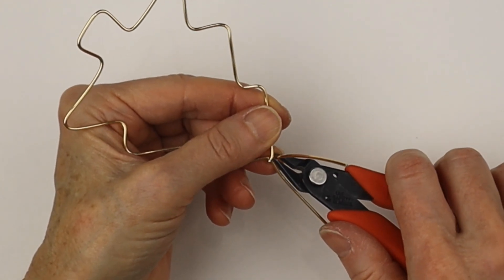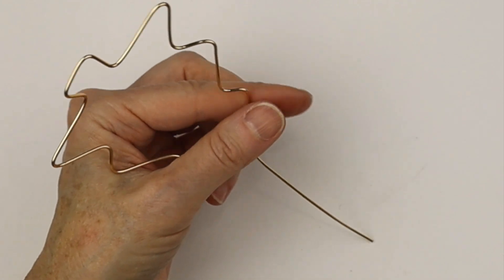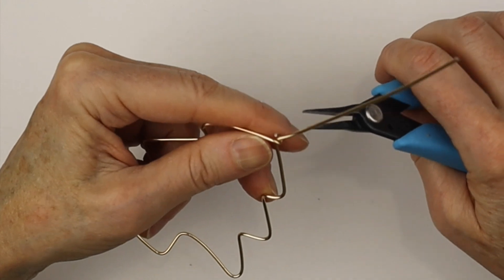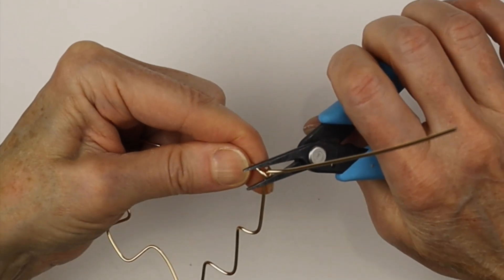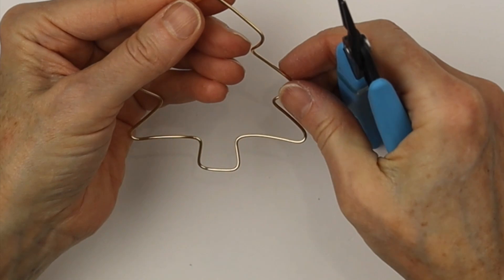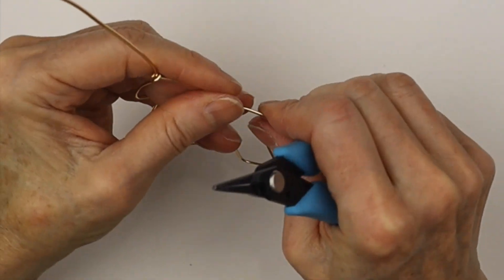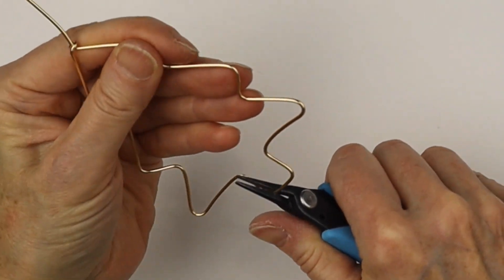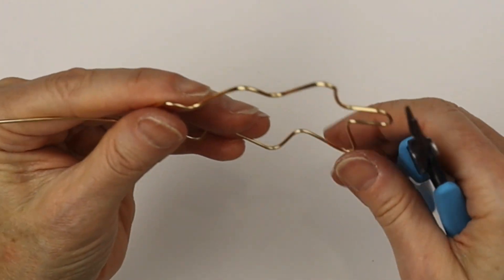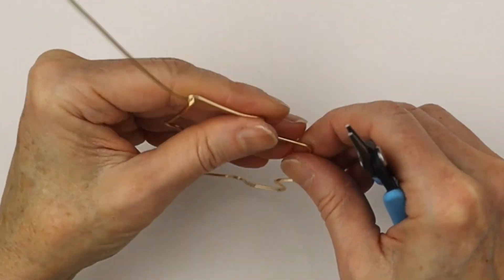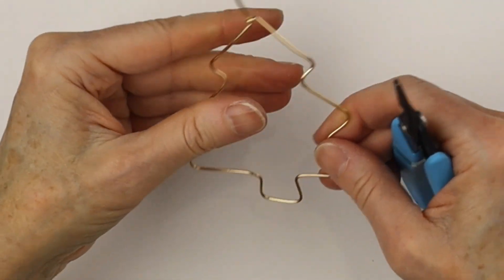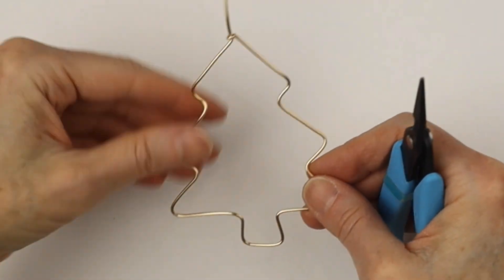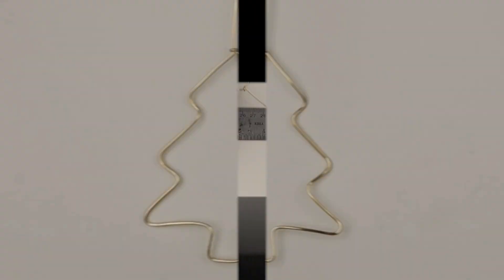From there we'll take our flush cutters. These are the Xuron flush cutters. We're going to clip it nice and flush and then take our flat pliers. These are the Xuron tweezer nose pliers and we'll give it a little pinch so it holds in place. Then you can do any little adjustments to make the tree a little bit flatter. You can do that with your pliers. You can do it with your fingers just to flatten it out a little bit. Tighten up at the top if you need to. And there's our outside shape.